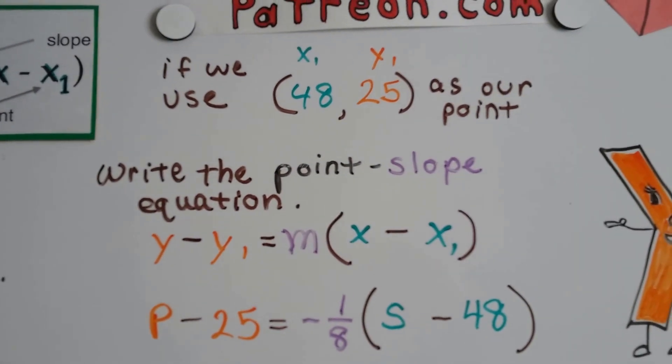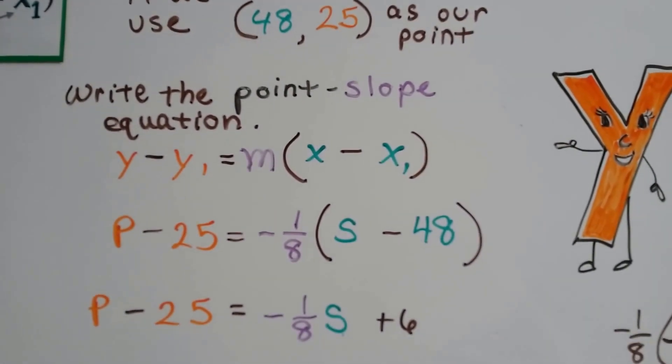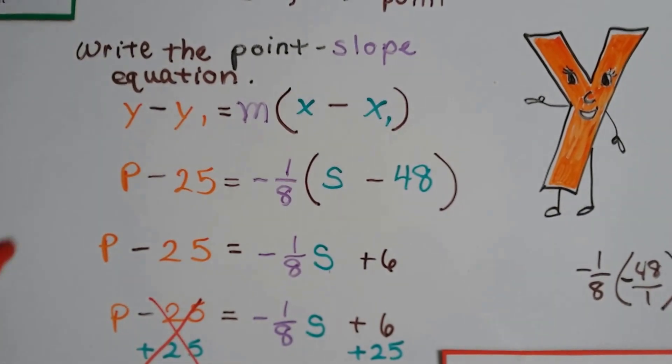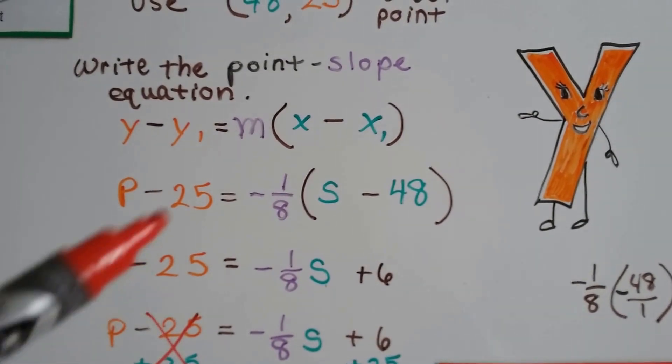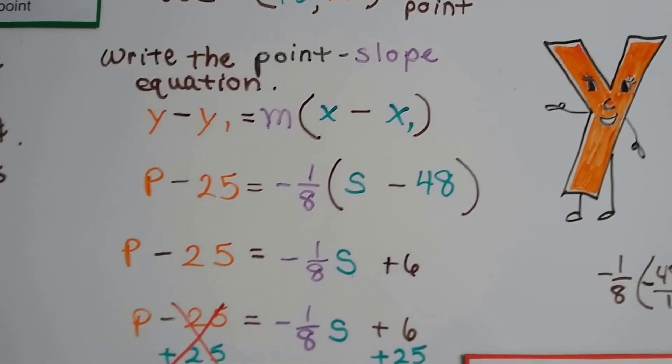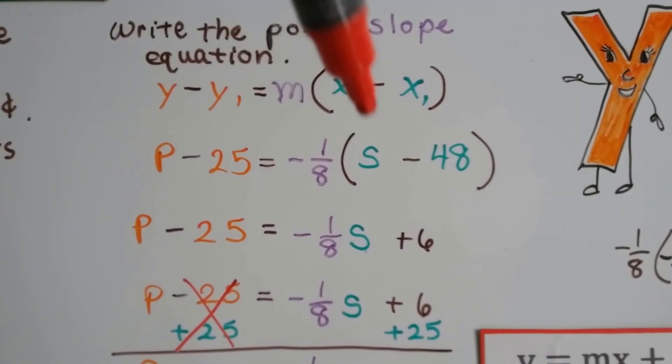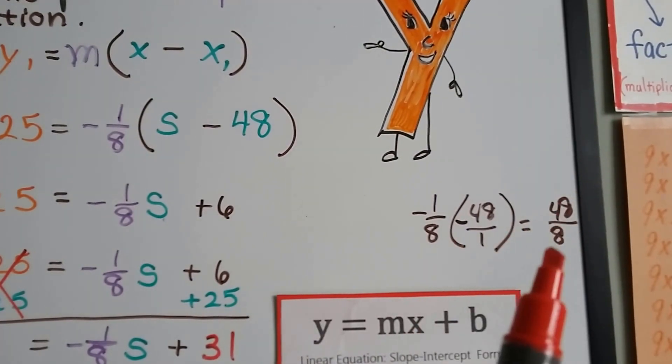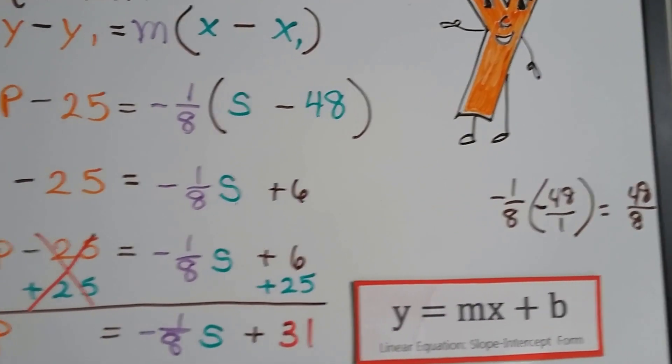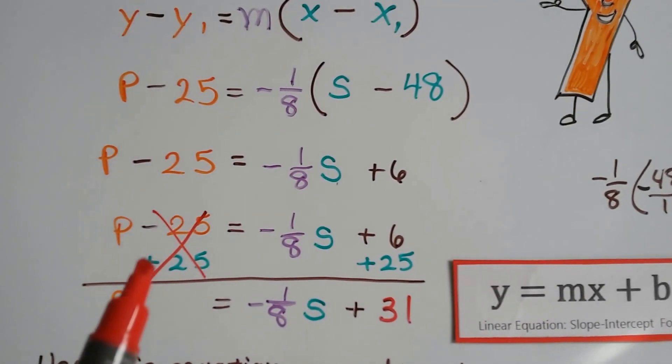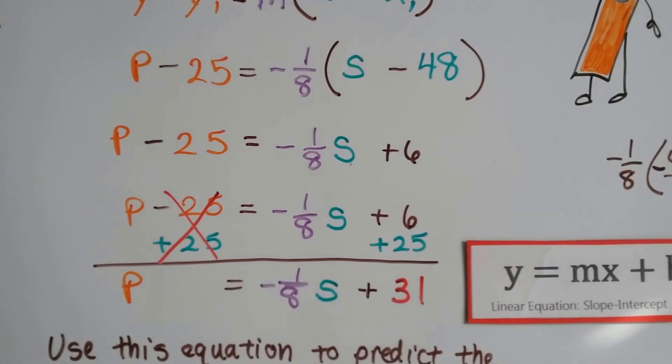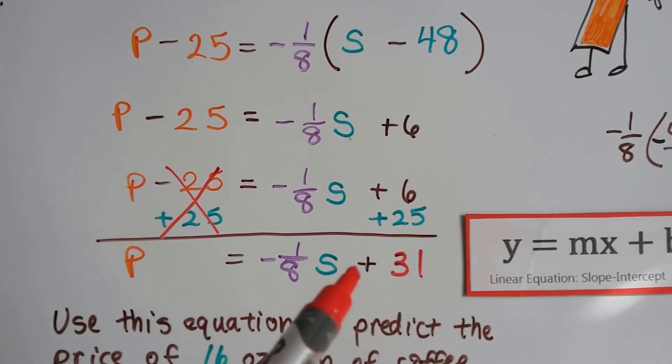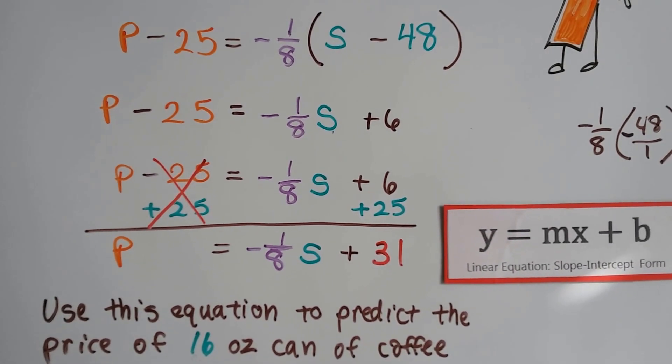So if we use 48 as the X1 and 25 as the Y1 as our point, and we have our slope of negative 1/8th, we can write the point-slope equation, which is right here. See? And we're going to use P for our Y and S for our X. We're going to use 25 for our Y1 and 48 for our X1. And when we multiply distributive property, negative 1/8th times S, we get negative 1/8th S. And negative 1/8th times negative 48. Well, that gives us a positive 48 over 8. We simplify that to a 6 because 6 times 8 is 48. So now we've got negative 1/8th S plus 6. We need to get rid of the 25 on this side. So we add 25 to both sides for additive inverse to make a zero pair. That makes this get eliminated right here. And we end up with just P equals negative 1/8th S plus, we add these, 31. See? Now it's in slope-intercept form.